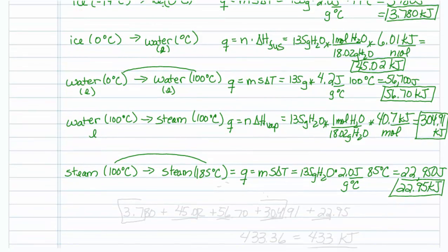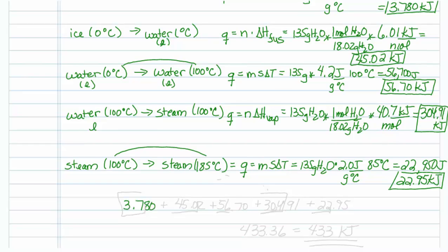Now it's just a matter of adding each step. So we've got 3.78 plus 45.02 plus 56.70 plus 304.91 plus 22.95. Now thinking about the number of sig figs that all of these are good to, each one is only going to be good to 2 sig figs for specific heat of ice or vapor. So that's really only good to that value. And my vapor is only good to the ones digit. My specific heat of water is also only good to 2 sig figs.